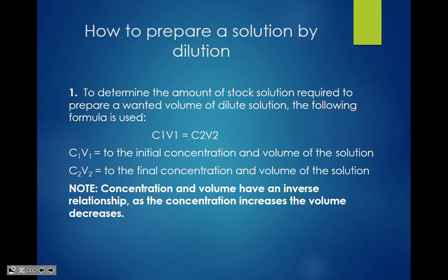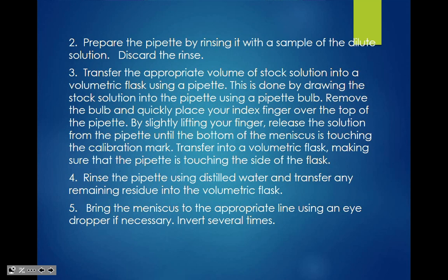How to prepare a solution by dilution: first, determine the amount of stock solution required using C1V1 = C2V2. Concentration and volume have an inverse relationship — as volume increases, concentration decreases. Step two: prepare the pipette by rinsing it with a sample of the solution and discard the rinse. Then transfer that amount into the appropriate volumetric flask and add enough water to reach the calibration line.